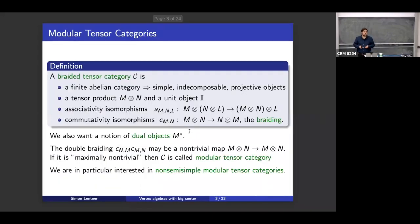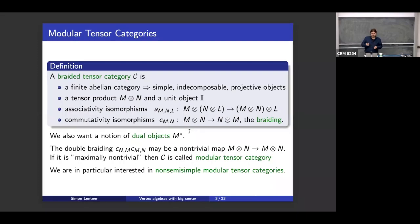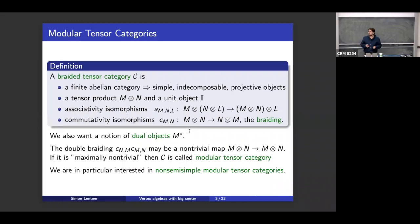Let's start by introducing the main players. We've had several talks on braided tensor categories. A braided tensor category is an abelian category — I assume it to be non-semi-simple. The important inputs or outputs are simple objects, indecomposables, and projective objects — that's the abelian structure. There's also tensor products, a unit object, associativity, and a way of switching tensor products. The typical thing about braiding is that if you switch M and N one time and then a second time, this double braiding is usually not trivial — and that's not a bug, it's a feature.